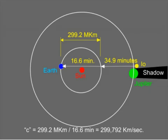Thus, the speed of light was not infinite, but was very fast. Today, using his timings and the known diameter of the Earth's orbit, it has been calculated that the speed of light was some 6% higher than it is today.